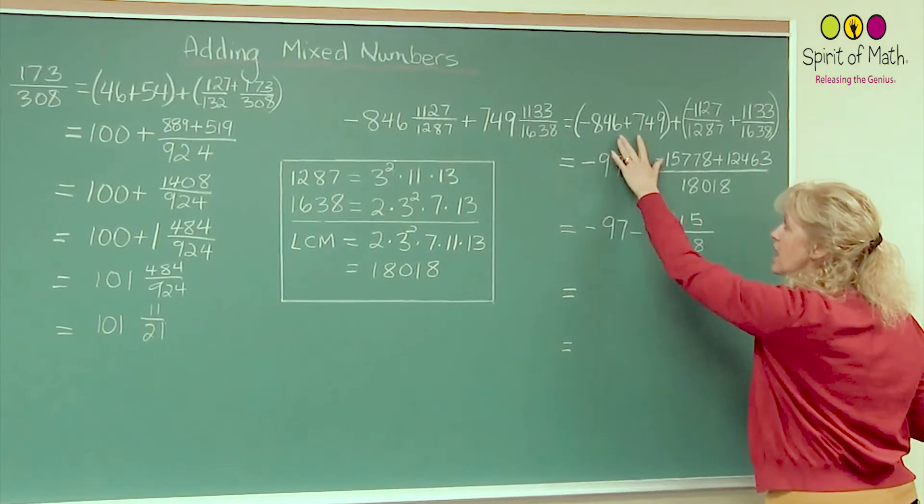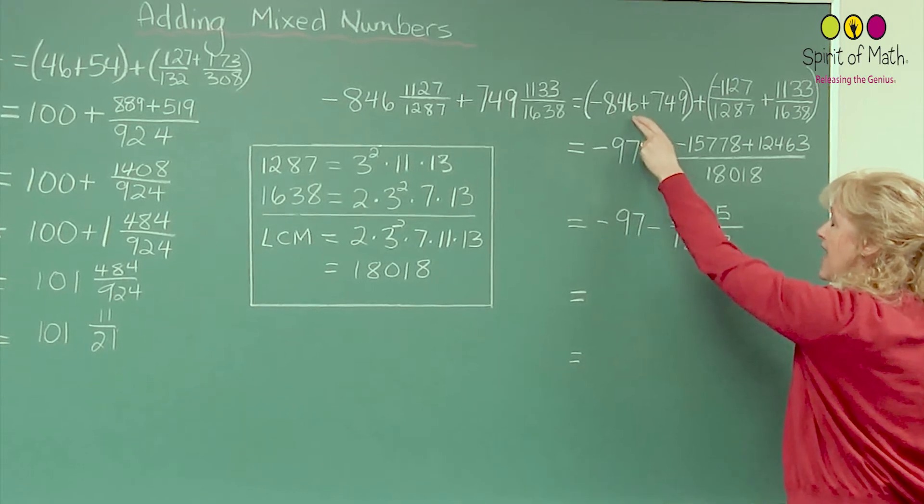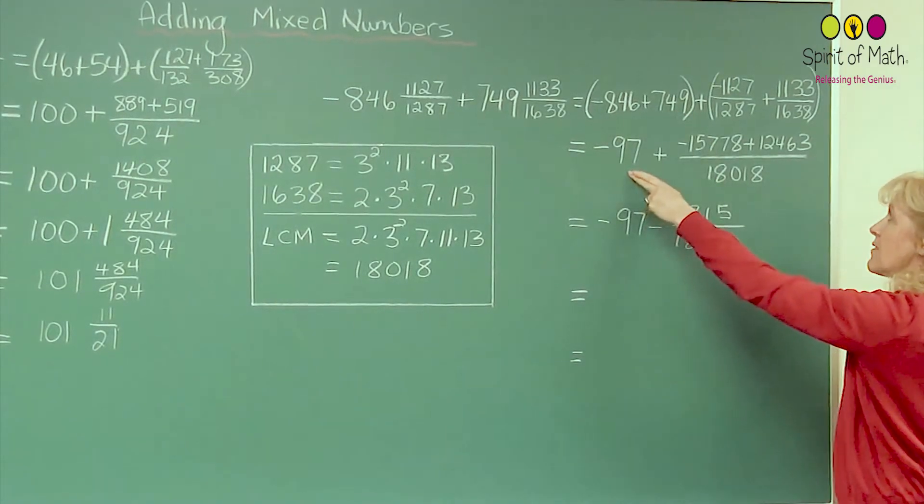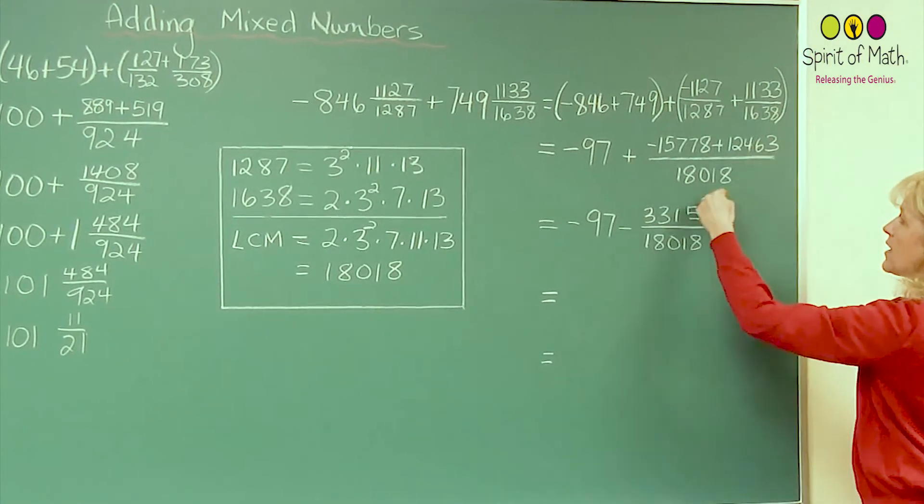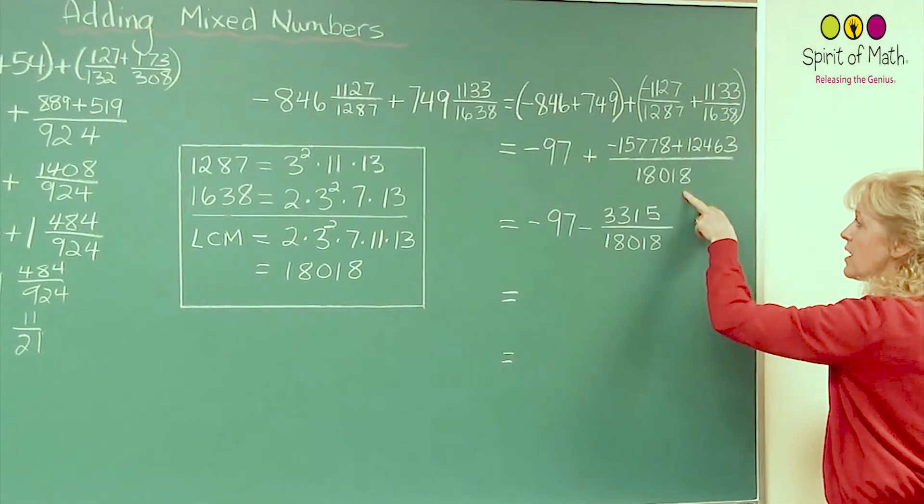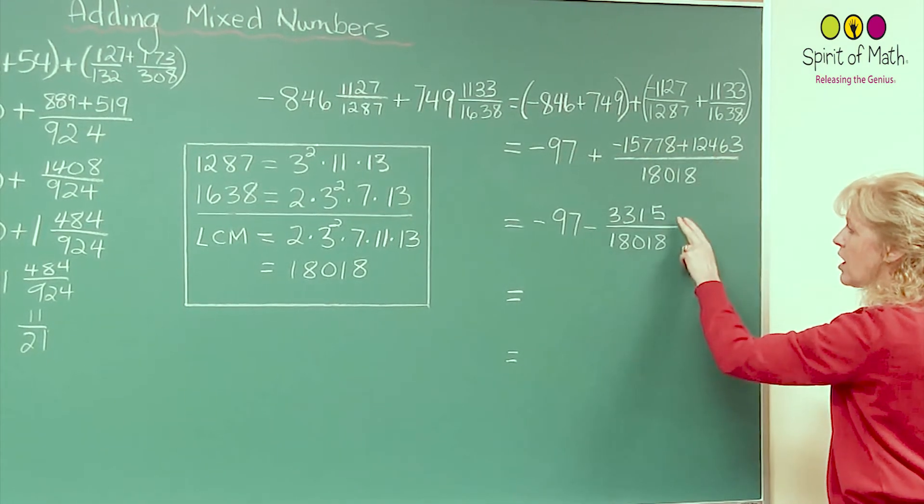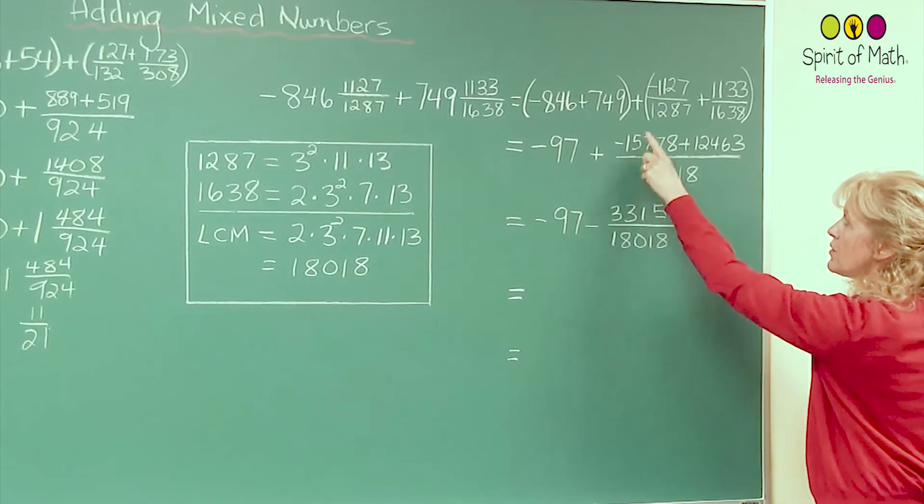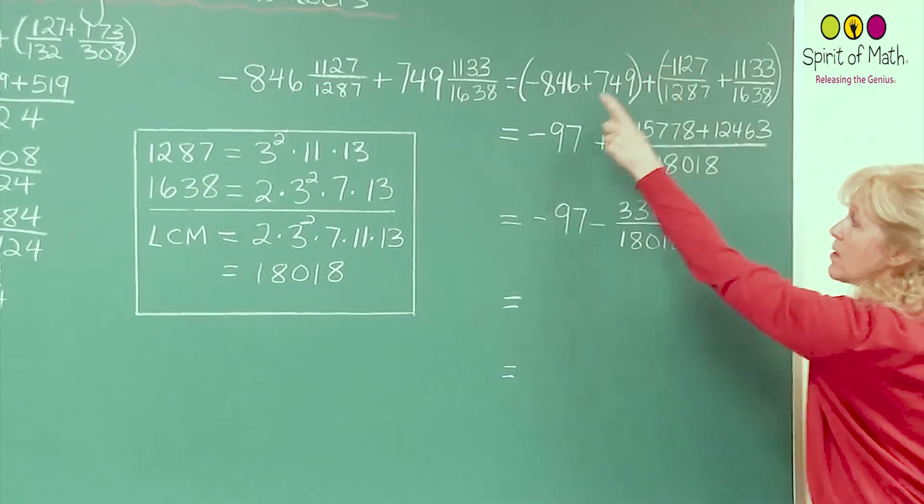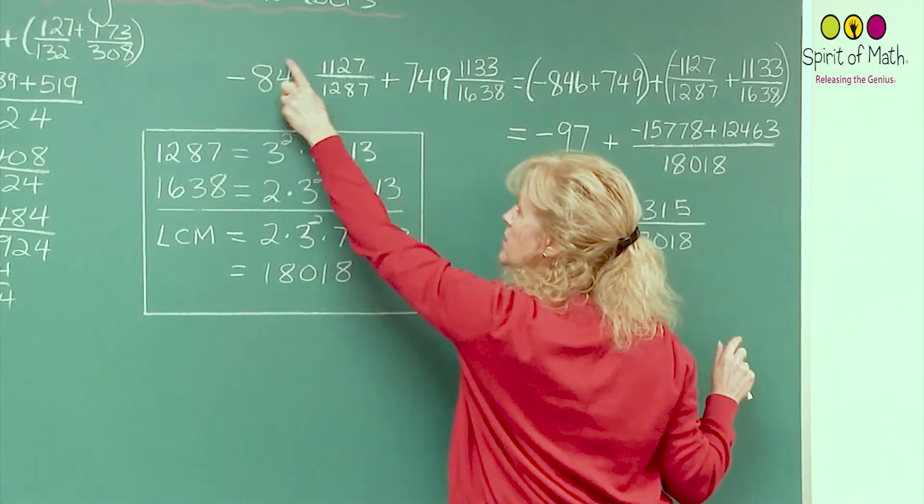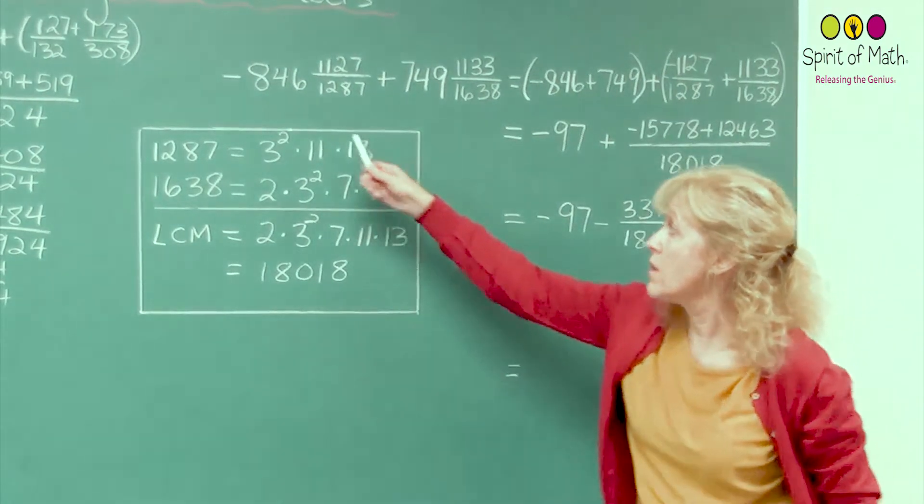Then you just add, well, in this case, you subtract. So you have negative, 846 plus 749 is negative 97. And then you treat this just like you would any other fraction question. And you subtract the numbers in the top and this is what you get. Notice that this is always a plus. The negative goes with that number and that negative came from here. So it still comes up here. That's one place that most students have difficulty.